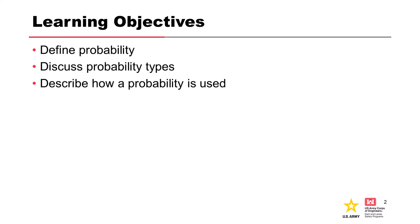We're going to discuss different types of probabilities. There are two generally accepted interpretations of probability today. We'll talk about both of those and then talk about how probabilities can be used and useful to us in a risk analysis.